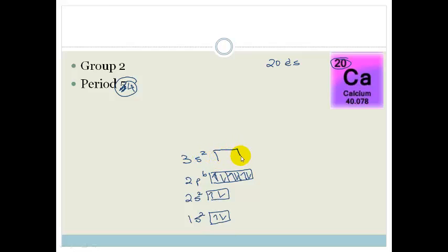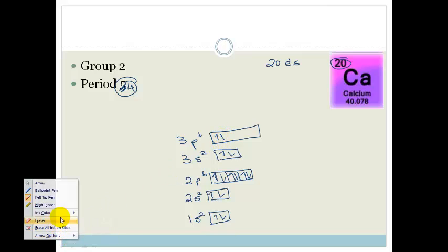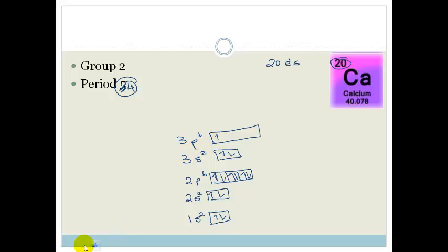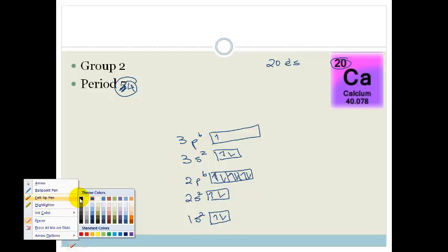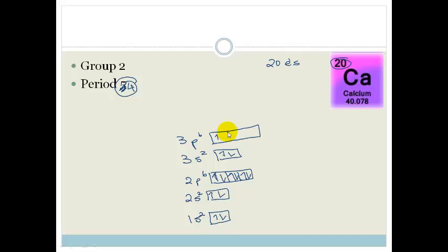Then I'm going to go 3s2. And here's my block. And I'm going to go up, down. And I've got 3p6. Oopsie. I'm rushing. And I didn't draw my line in first. Let's try that again. And there we go. There's my blocks. 3p6.